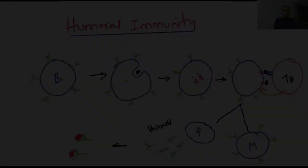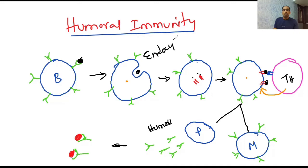Now let us see the mechanism of humoral immunity. Whenever the B cell reaches the secondary lymphoid organs where antigens are present, the B cell can recognize free antigens — it cannot recognize intracellular antigens. Whenever any antigen comes in contact with a specific B cell, it recognizes that antigen and engulfs it by a process called endocytosis. Here the B cell acts as an antigen presenting cell.